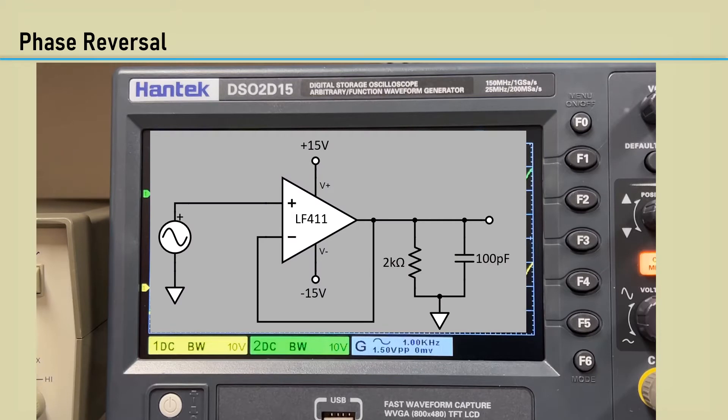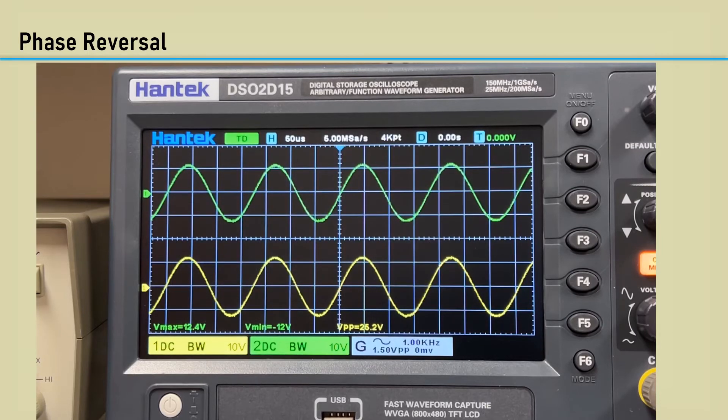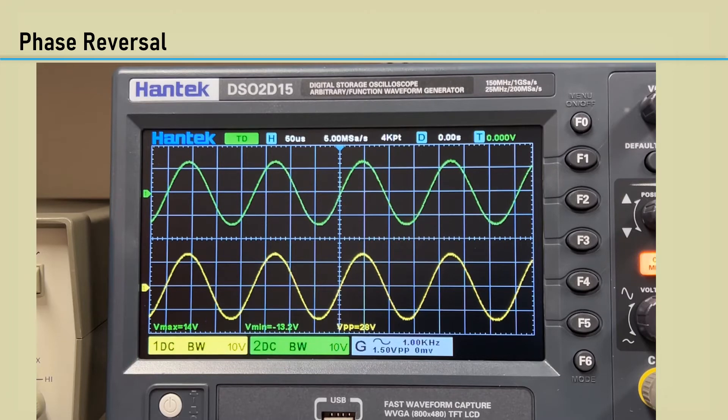I have the LF411 in a voltage follower configuration with a power source of plus and minus 15 volts with a typical load setup. The input is the green trace on top, and the output is the yellow trace. I'm increasing the input voltage.